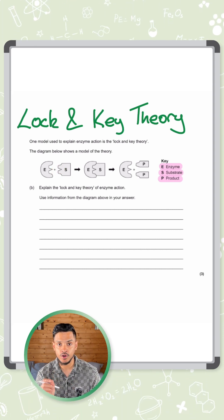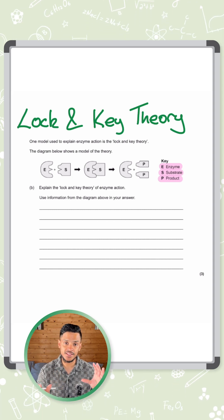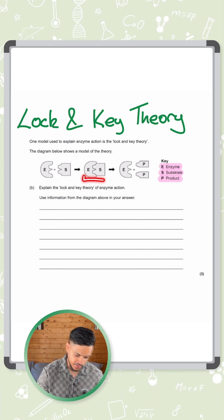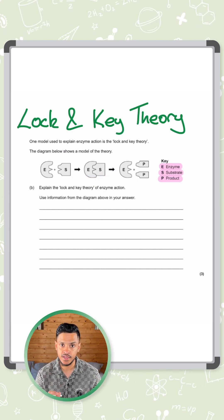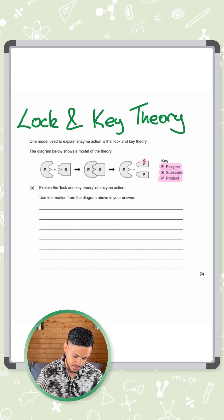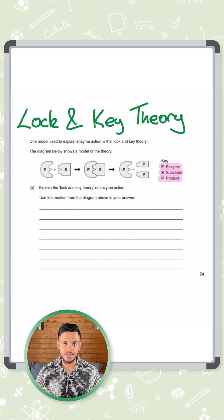Both of these shapes are complementary so that means the shape of the active site fits the substrate in perfectly and that's what the second part of the diagram is showing. The substrate goes into the active site of the enzyme. Once that's happened you can see here the substrate splits into products with the P and then it leaves.